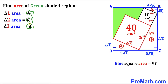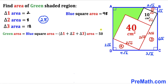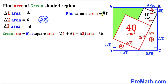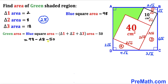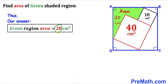Adding all triangle areas: 2 + 8 + 18 = 28 cm². Now recalling our equation: Green shaded area = Area of blue square − sum of triangle areas − sum of square areas = 98 − 28 − 50 = 20 cm². Thus the area of the green shaded region turns out to be 20 cm². Thanks for watching, and please don't forget to subscribe to my channel for more exciting videos!